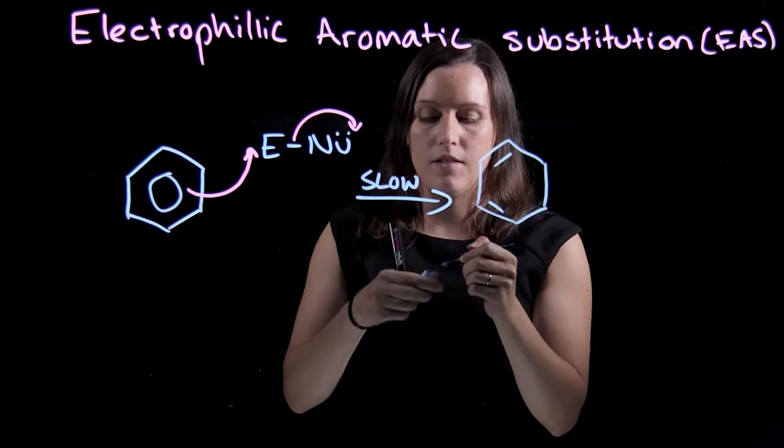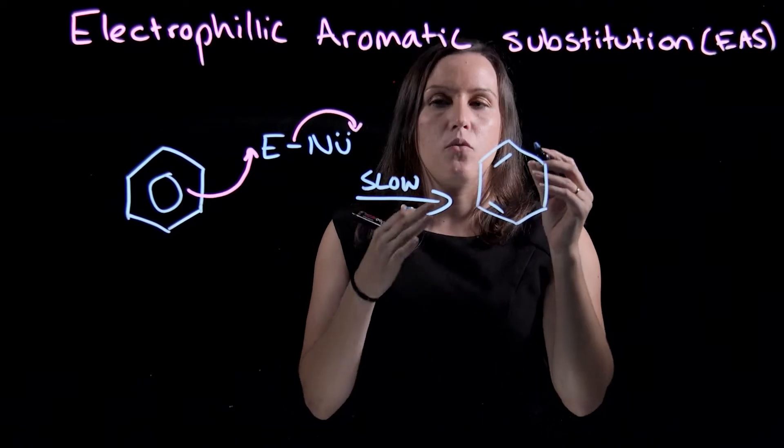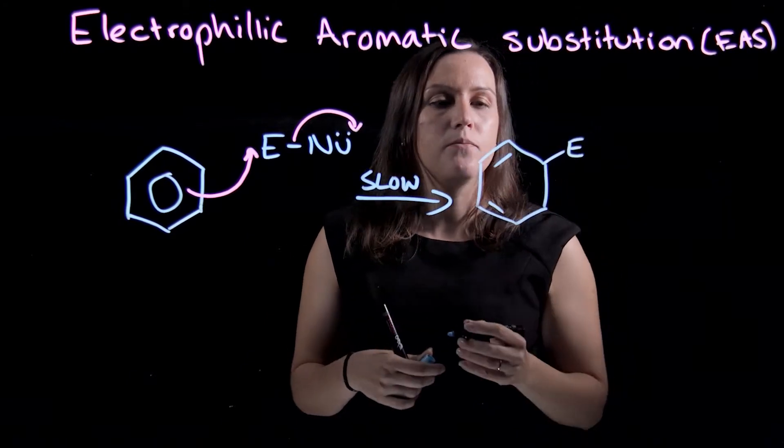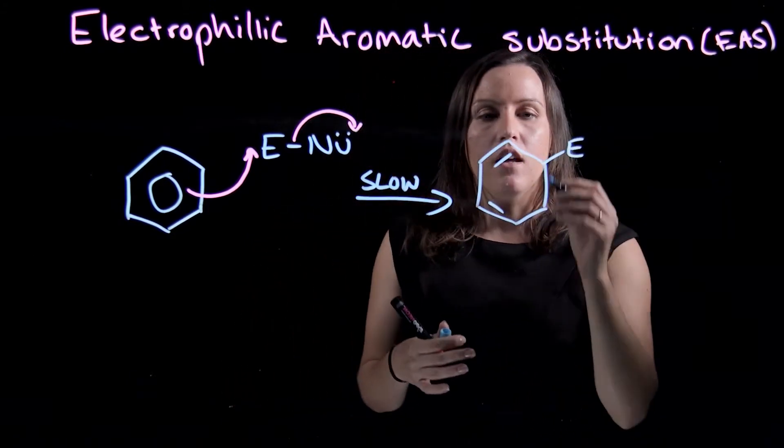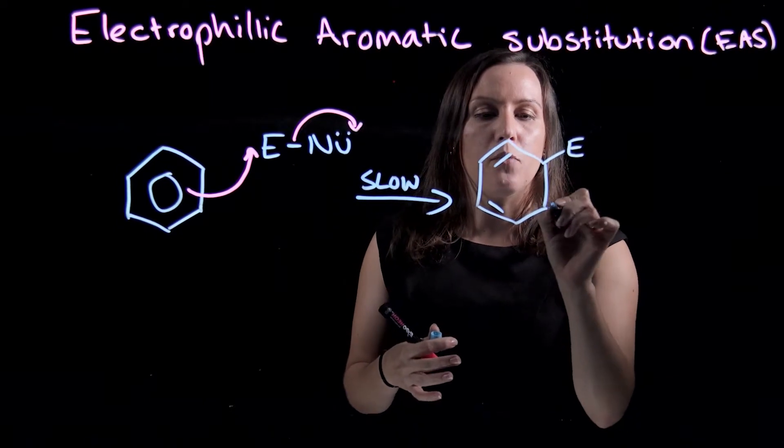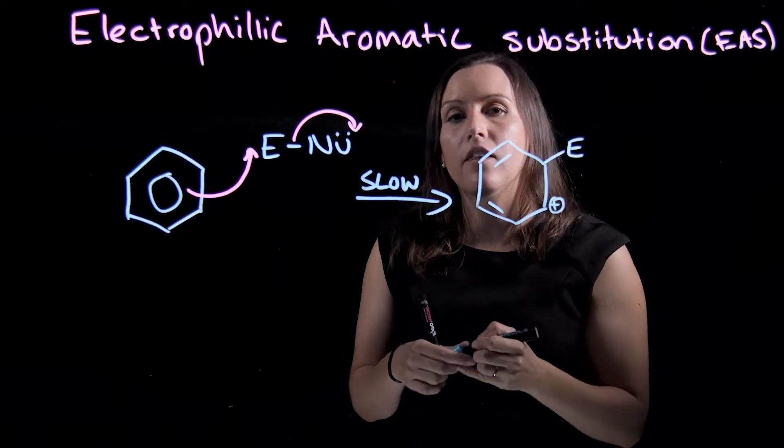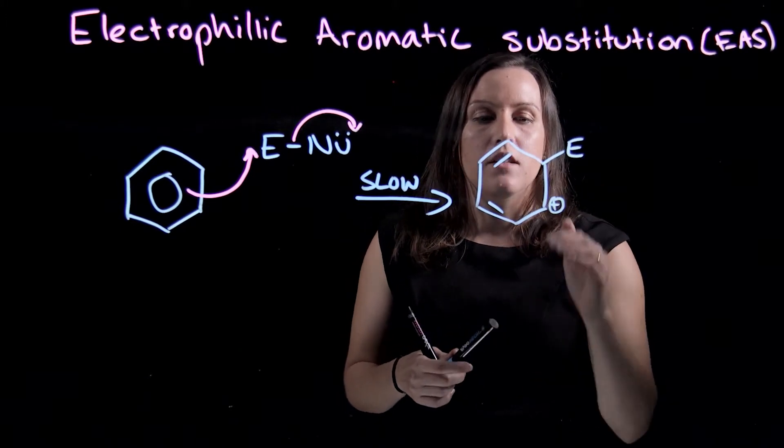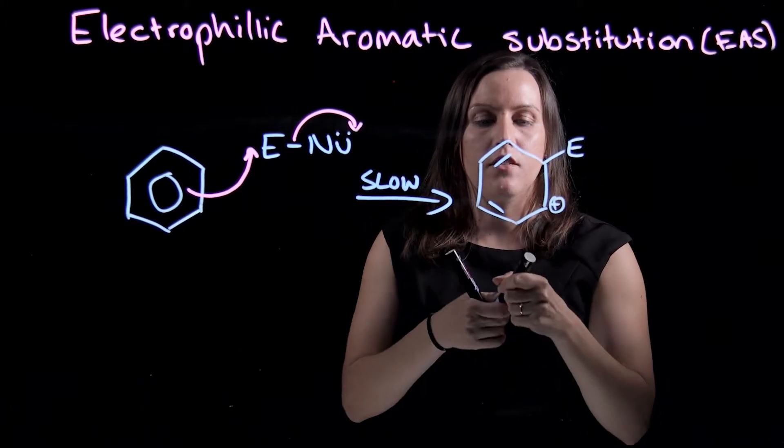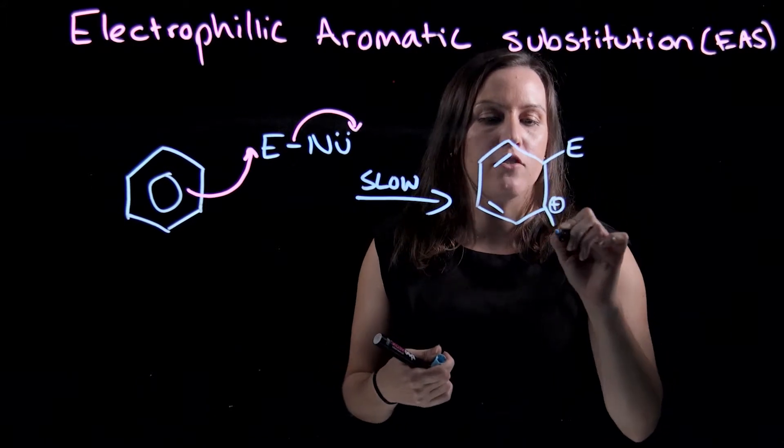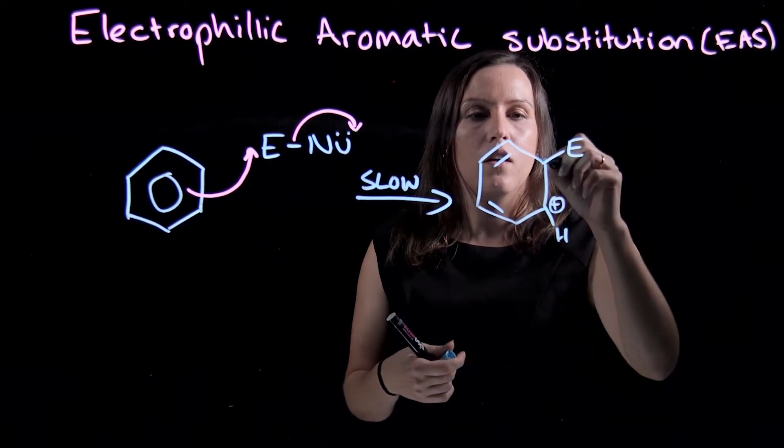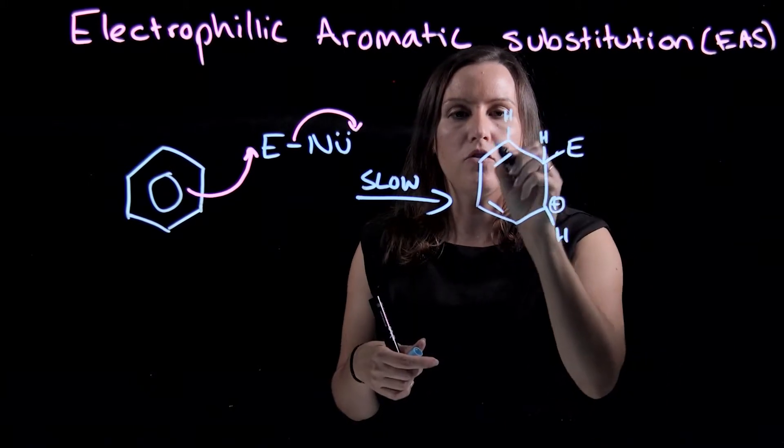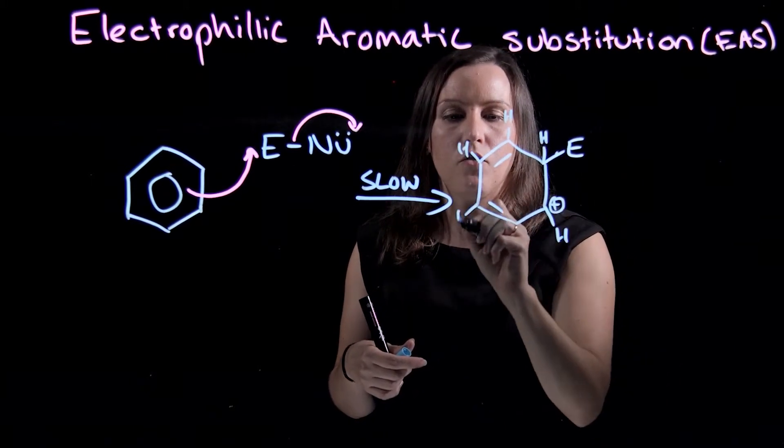Once we've added on our E-group, we will have a positive charge on the other carbon that's directly next to it. This positive charge—we also have a hydrogen on there. I'll draw the hydrogens on the other end of the ring for you.